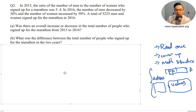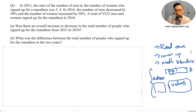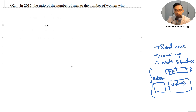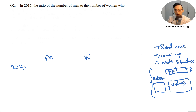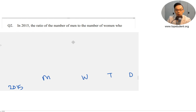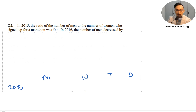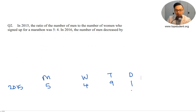I've got my card ready — I'll cover the question and read it once. The ratio of men to women is something, 2016 decreased by something, increased by something, total 2016, overall increase or decrease, what's the difference. So I need a total column and a difference column. In 2015, ratio of men to women — I have men and women. Men to women is 5 is to 4, total is 9, difference is 1.